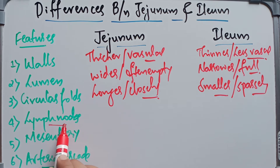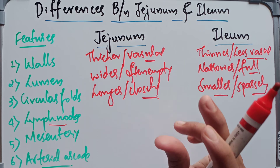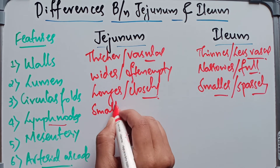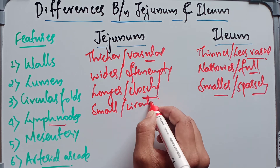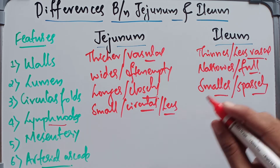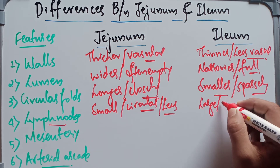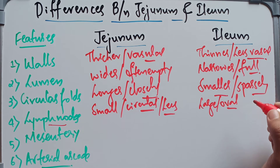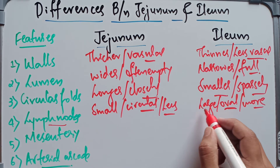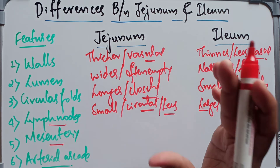Coming to the lymph nodes, which are nothing but Peyer's patches: in the jejunum they are often small, circular, and very few in number. Whereas in the ileum they are large, oval in shape, and more in number.